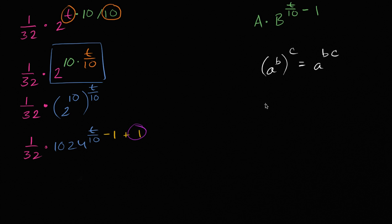And so what is this going to be? We want to leave this minus 1 here, but we want to get rid of this plus 1 somehow. And here we just have to remind ourselves that if we have a to the b times a to the c, that's going to be equal to a to the b plus c. If you have the same base multiplied, same base raised to different exponents and you multiply them, you could just add the exponents.